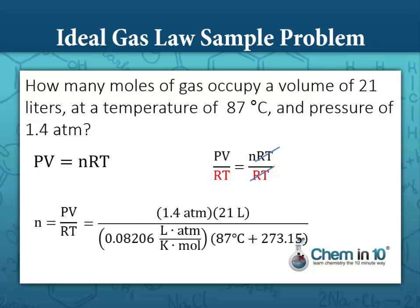Plugging in the values: pressure is 1.4 atm, volume is 21 liters, R is 0.08206 liters atmosphere per k-mol, and temperature we have to put in Kelvin by adding 273.15 to 87 degrees Celsius. We cross out the units that cancel out and we get our answer: 0.99 moles.